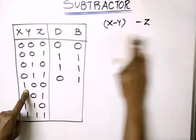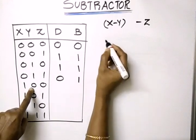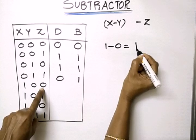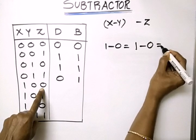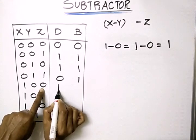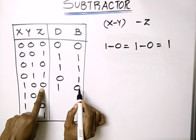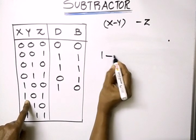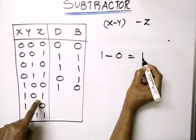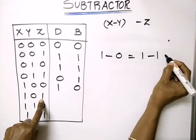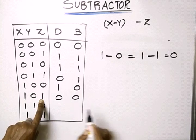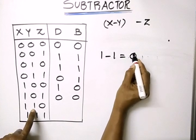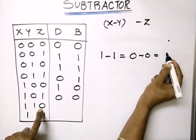For X=1, Y=0, Z=0: X minus Y is 1 minus 0 equals 1 with no borrow, then subtract Z=0, giving difference 0 and borrow 0. For X=1, Y=1, Z=0: 1 minus 1 equals 0, then subtracting 0 from the result gives 0. There is no borrow taken, so borrow B equals 0.